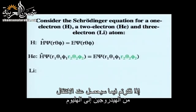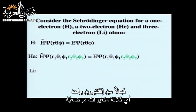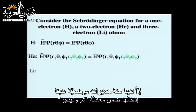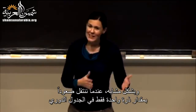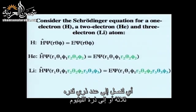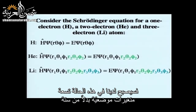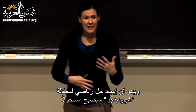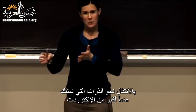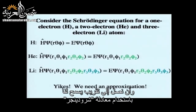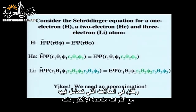When we go from hydrogen to helium, instead of one electron with three position variables, we have two electrons requiring six position variables. Moving to lithium means nine variables. It turns out it's mathematically impossible to solve the exact Schrödinger equation for higher numbers of electrons, so we need an approximation for multi-electron atoms.